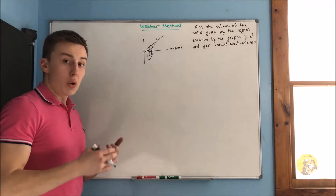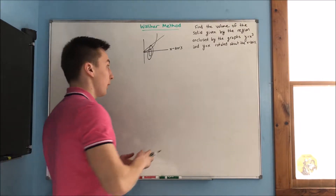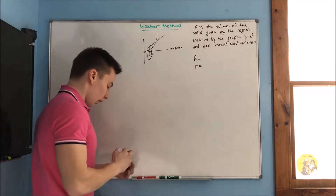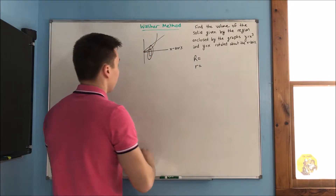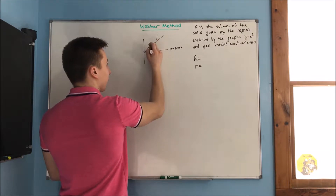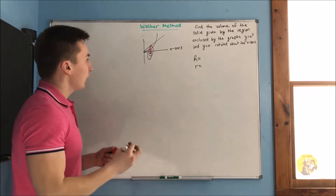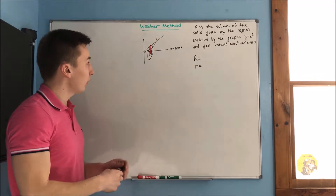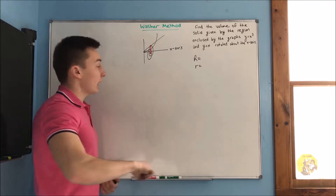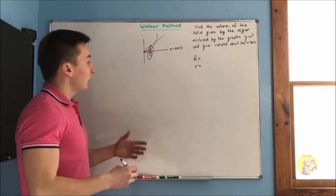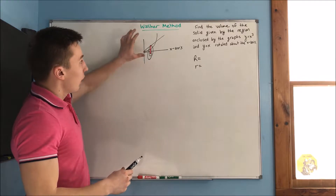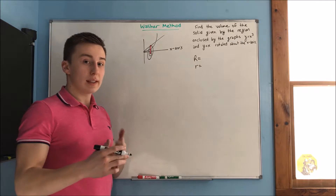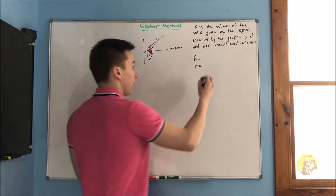From there we need to find our big R and our little r — our big radius and our little radius. Our big R is going to be the distance from our upper graph to the center point, which is going to be on the x axis because that is where we are rotating around. Our upper graph is y equals x, so that distance is going to be x. Our upper radius is just x.